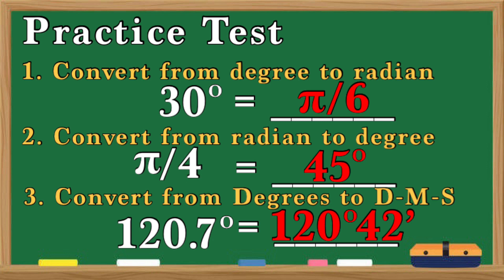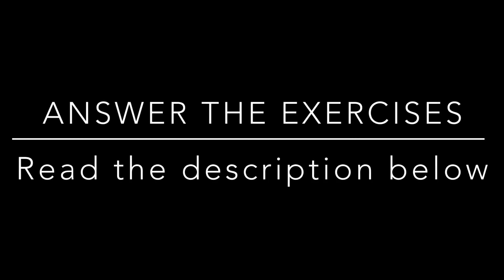Now compare your answers: for number one, 30 degrees is equal to pi over 6 radian. Number two, pi over 4 is equal to 45 degrees. And 120.7 degrees is equal to 120 degrees and 42 minutes. For what to do next, kindly read the description below.